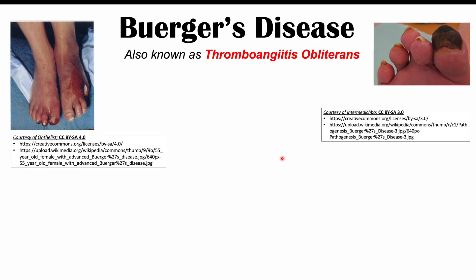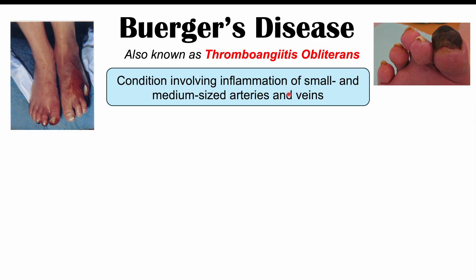Buerger's disease is also known as thromboangiitis obliterans. It's a condition involving inflammation of small and medium-sized arteries and veins, so it's not going to affect large arteries and veins such as the aorta, and it's not going to affect more proximal arteries and veins. It's going to affect more distal arteries and veins.